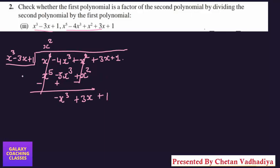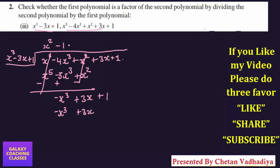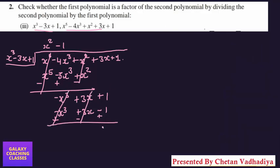The next quotient term is –1. Multiplying –1 by x³ gives –x³; –1 by –3x gives +3x; and –1 by 1 gives –1. After changing signs, –x³ cancels and +3x cancels, but –1 and +1 do not cancel, leaving a remainder of 2. Since the remainder is not 0, the first polynomial is NOT a factor of the second polynomial.